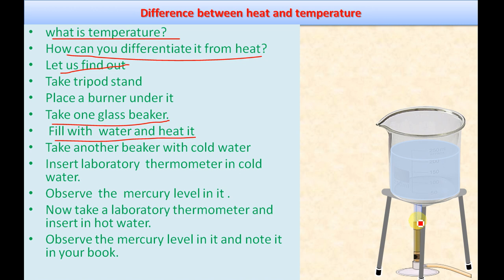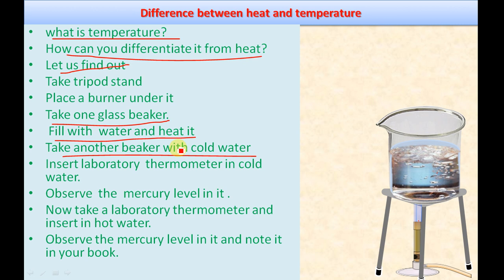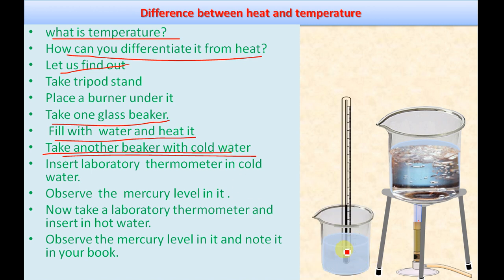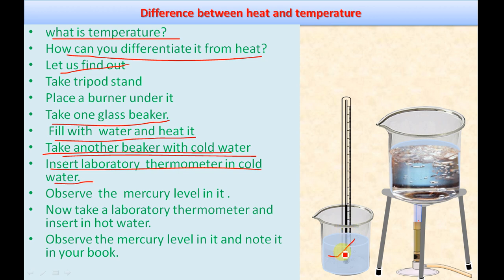The water gets heated. Then take another beaker with cold water. Here we have two beakers — one with heated water and another with cold water. Insert a laboratory thermometer into the cold water beaker. The thermometer liquid, which is mercury, is now in thermal contact with the cold water.